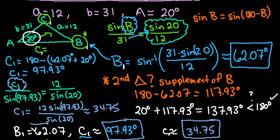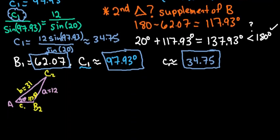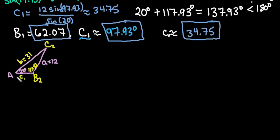So we solved the first triangle. Now we have to remember that we have the second triangle that we have to solve. So we now have to find, we already found B2, so we need to find C2, and we have to find C2. So remember that we already found the second angle that could work for B2, which was 117.93.